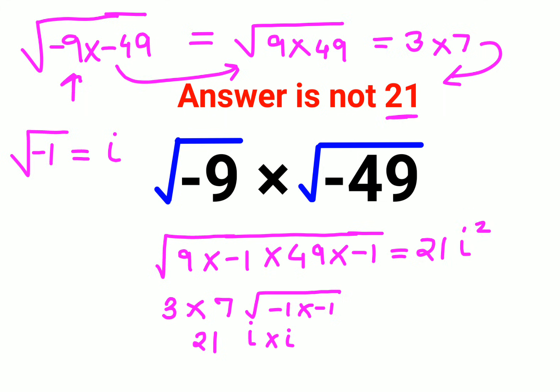Now what is the value of i squared? I need to square both sides to get the i squared value. Root of negative 1 the whole square is just minus 1. So this becomes 21 into minus 1, and your answer comes out to be minus 21.